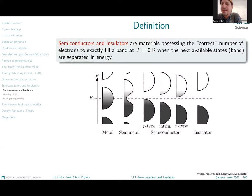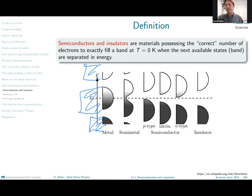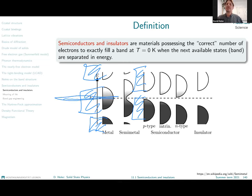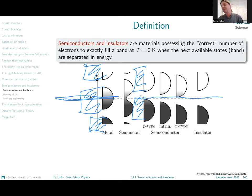Semiconductors and insulators are materials that contain a band gap right at the Fermi level. If I look at the band structure of such a material, it will contain energy bands — every material does. But unlike metals, where the Fermi level goes right through one of those bands, for semiconductors and insulators this Fermi level lies directly in the band gap, an energy which none of the electrons can have.